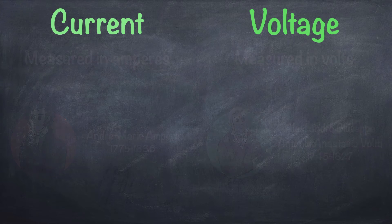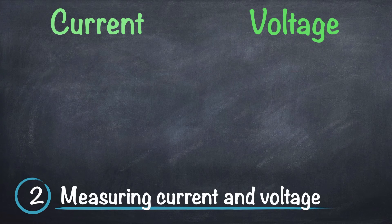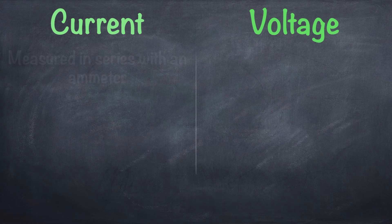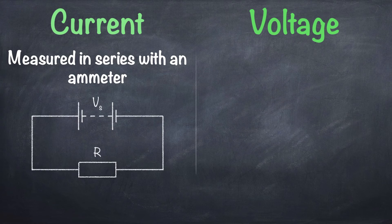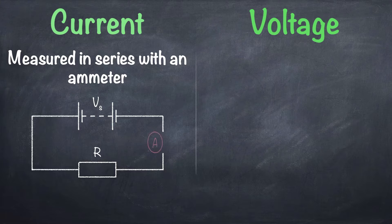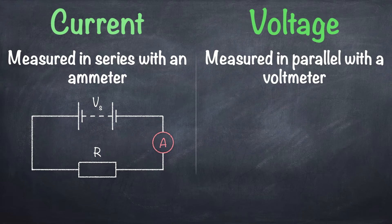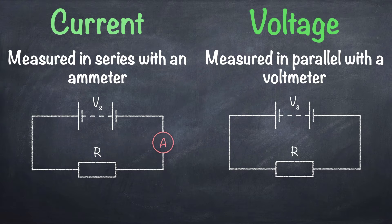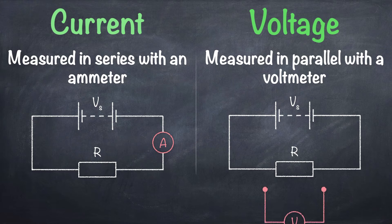Number two, measuring current and voltage. Current is measured in series with an ammeter. So in this circuit you'd have to create a gap in the circuit in order to place it like so. Voltage is measured in parallel with a voltmeter. No need to create a gap in the circuit. In this circuit if you wanted to measure the voltage across the resistor you'd connect the voltmeter like so.